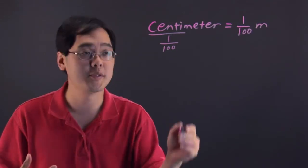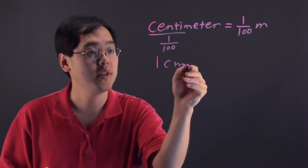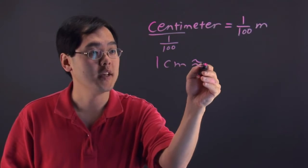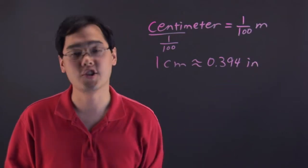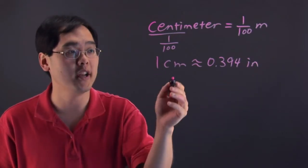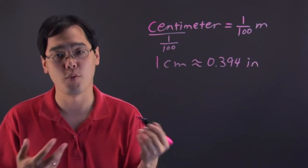But to put things into a different perspective, one centimeter is approximately 0.394 inches. In other words, a centimeter is not even half an inch, not even 0.4 inches.